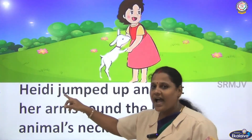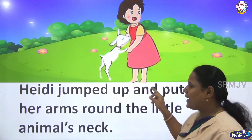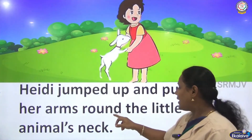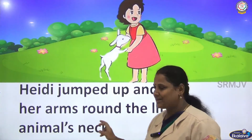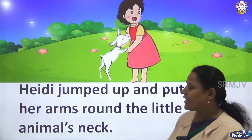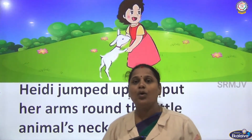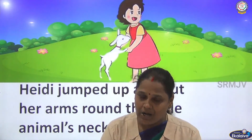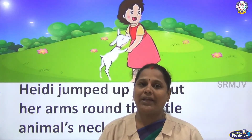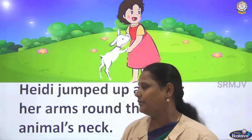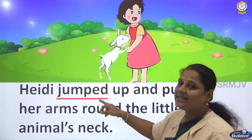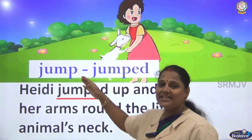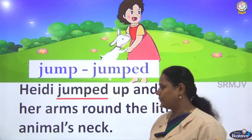Heidi jumped up and put her arms around the little animal's neck. Heidi went near to Snowflake and put her arms around its neck. 'Jumped' is the past tense of 'jump'.